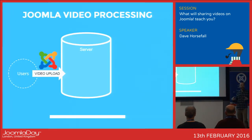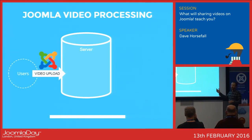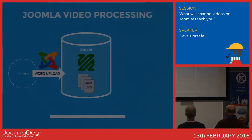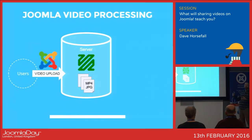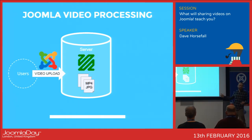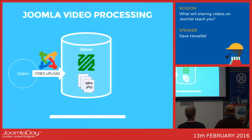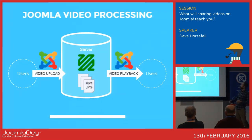Our Joomla users will upload video files onto our server through the Joomla web interface. We'll use FFmpeg to generate new versions of the original video file in MP4 format and generate new JPEG thumbnails for use in the gallery. We'll then use those new files generated with FFmpeg to display the videos back to our Joomla users through the Joomla web interface.